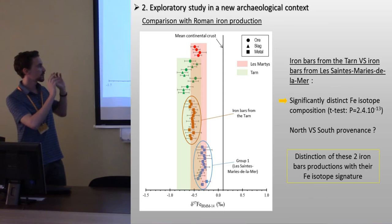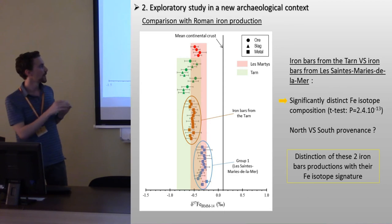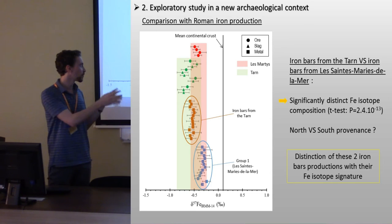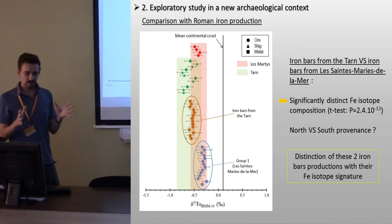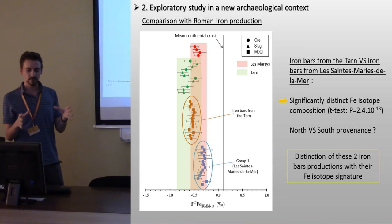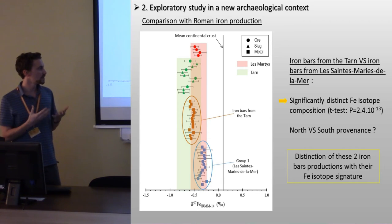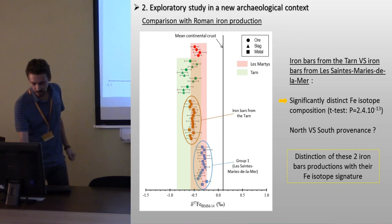A provenance from the north part of the Montagne-Noire for the pre-Roman bars, and a provenance from the south part of the Montagne-Noire for the Roman production. So here, at the scale of the mining district, iron isotopes allow distinguishing two productions, and could be a relevant tracer.